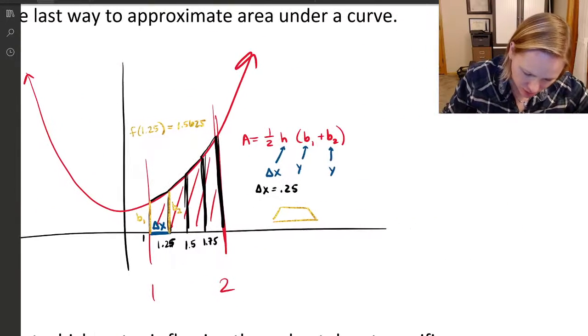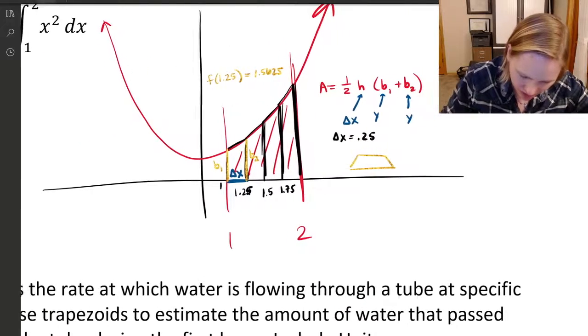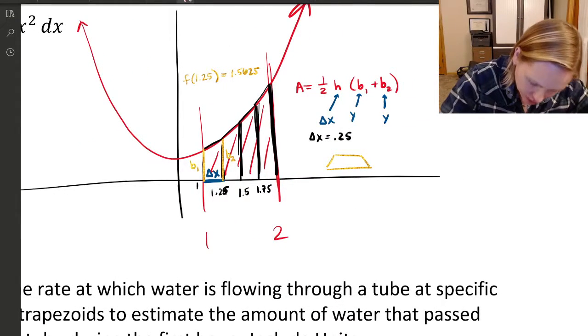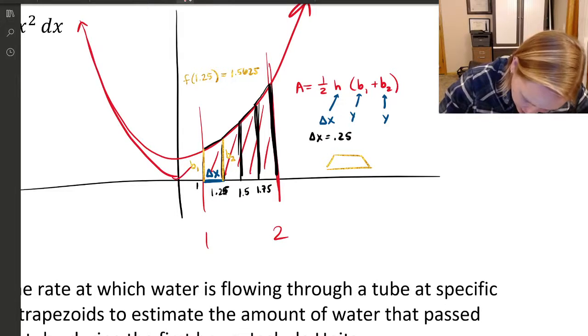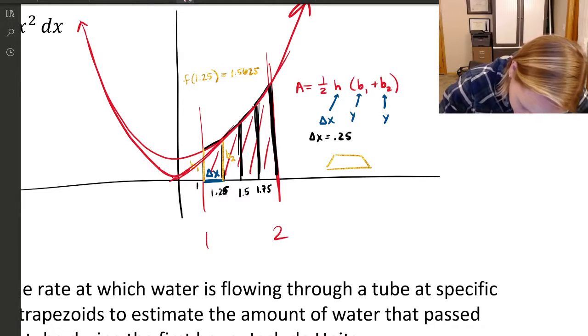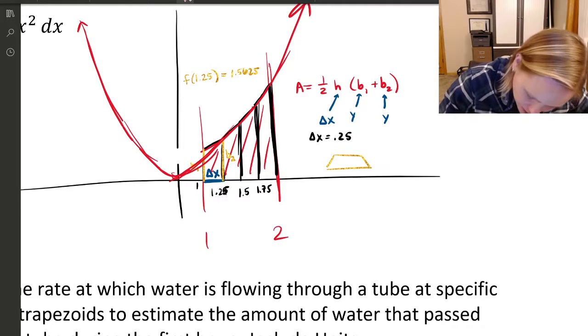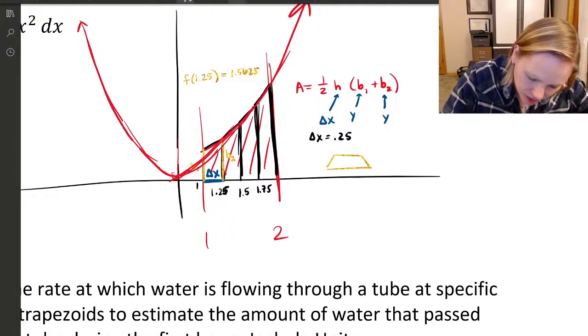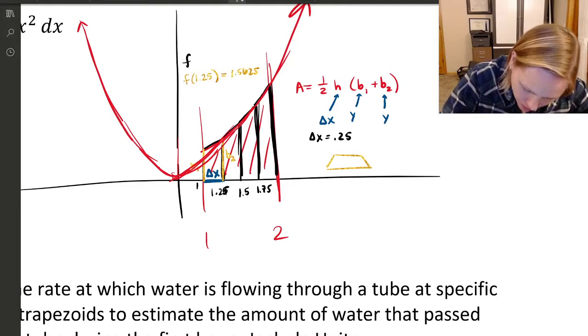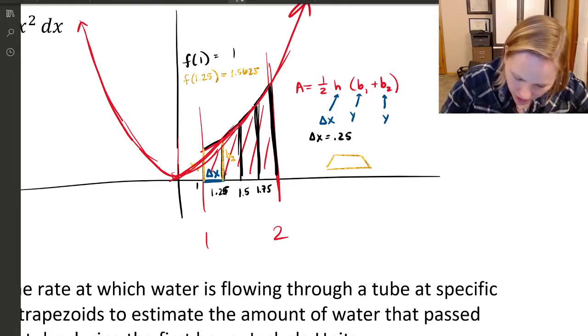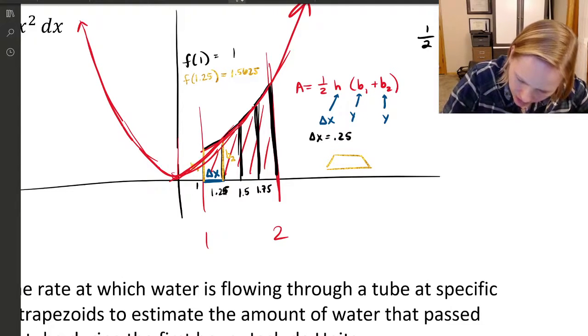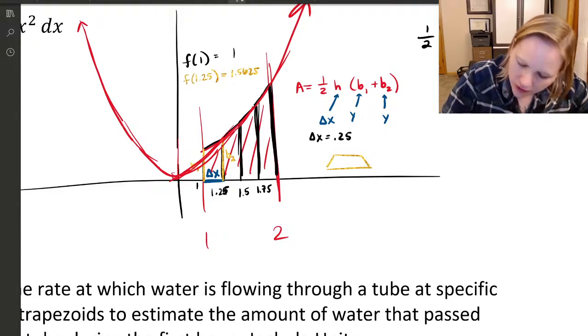Let me fix this graph so it's mathematically accurate. So f of 1.25 is just 1.25 squared, which is 1.5625. To find this trapezoid, I would also need to know f of 1. So this first trapezoid would be one half times delta x is 0.25 times b1 is 1 plus b2 is 1.5625.